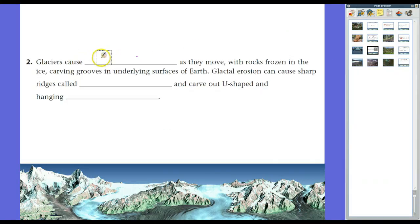Glaciers will cause erosion as they move, with rocks frozen in the ice carving grooves in underlying surfaces of Earth. And glacial erosion can actually do macro work. At the micro level, we'll have what's called striations, which essentially are scrapes, where rock gets caught in the glacier and as it drags down, you know, only a couple of centimeters per year, about an inch or so. So they move real slowly. Slowly but surely, those rocks scrape and they cut away and they carry sediment and rocks, things like that.